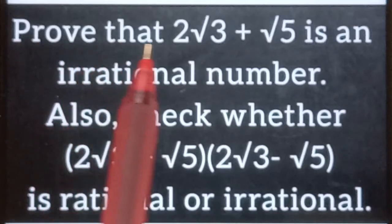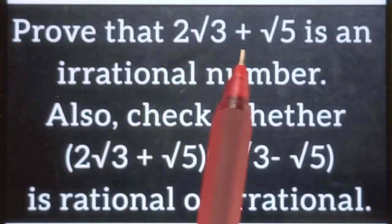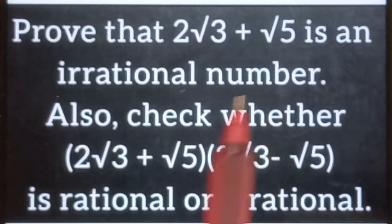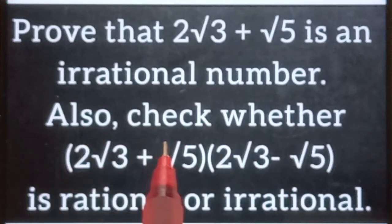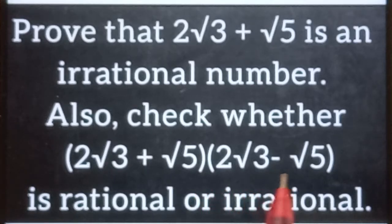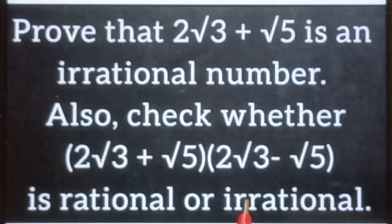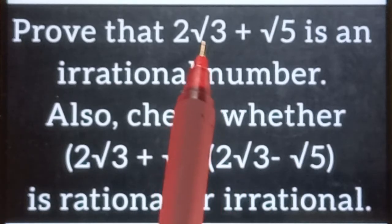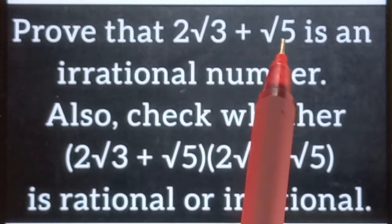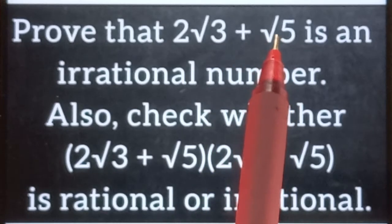Prove that 2√3 plus √5 is an irrational number. Also check whether 2√3 plus √5 into 2√3 minus √5 is rational or irrational. As you can see that √3 and √5 are irrational numbers.